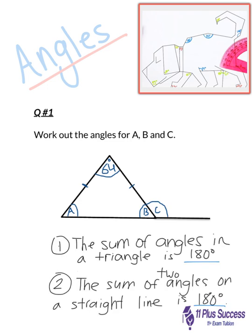Number one. The sum of angles in a triangle is 180 degrees.